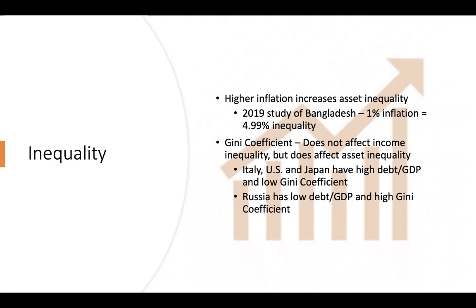Relating this back to the United States, if we continue down the same route we could possibly see it here too. In this study, the authors reported that 1% of inflation equaled 4.99% of inequality. Tying this back to class, we looked at the Gini coefficient, which measures the extent to which the distribution of income among individuals or households within an economy deviates from a perfectly equal distribution. Zero would be perfectly equal, and 100 would be perfect inequality.